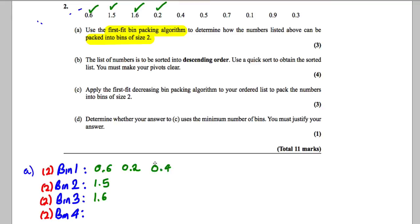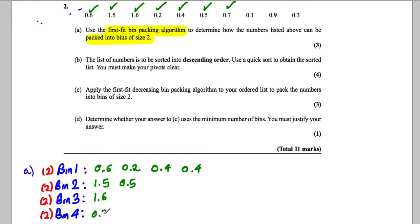Now 0.2 can fit in bin one — so 0.2 goes there. The 0.4 can also fit in bin one, giving us 0.8 total so far, with 1.2 space remaining. The 0.4 fits there too, giving us 1.6 in bin one. The 0.5 can't fit in bin one but can fit in bin two, completing that bin. The 0.7 can't go in bin one as there's only 0.4 space, and can't go in bin two either.